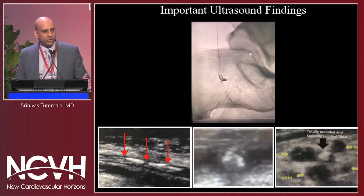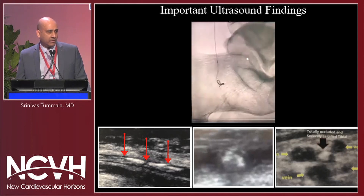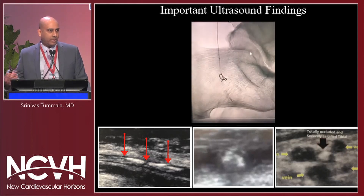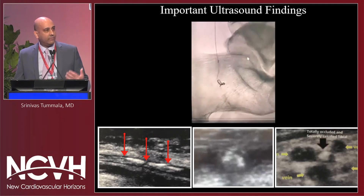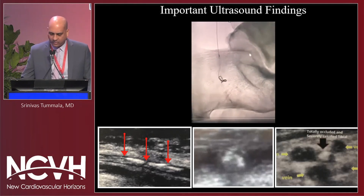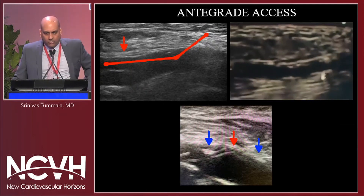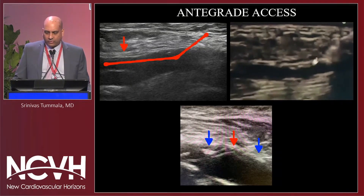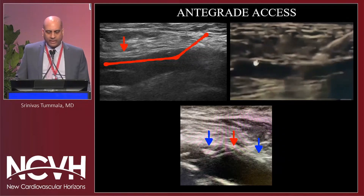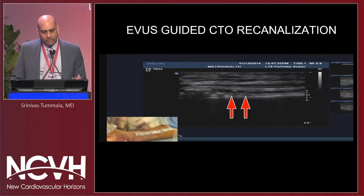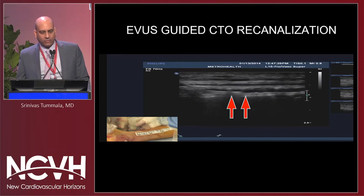Getting through or around these in tibial vessels is basically impossible. A lot of patients, when you see this in the plantar or pedal circulation, are the patients that ultimately end up with an amputation if you don't end up doing a deep venous arterialization — but that's another talk. We're all familiar with extravascular ultrasound in terms of access, avoiding plaque, avoiding calcification, and so forth. But I want to show you what you can do when you're doing CTO recanalizations.